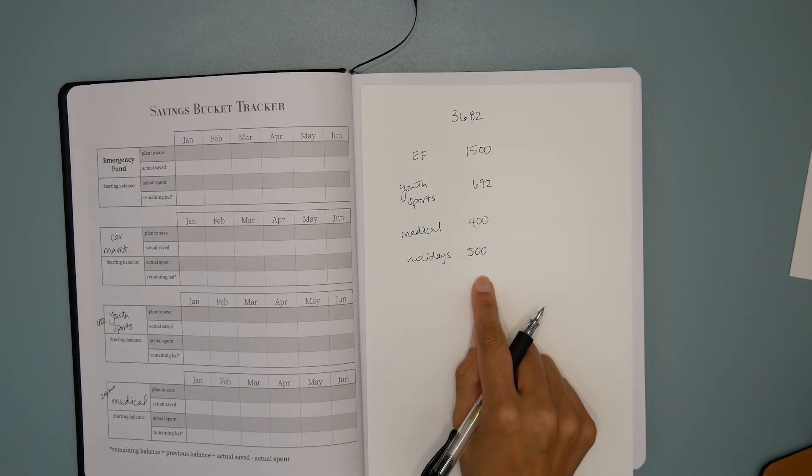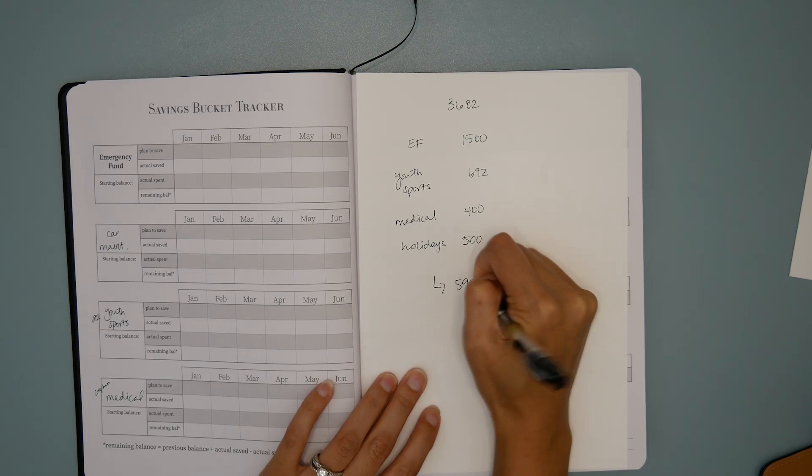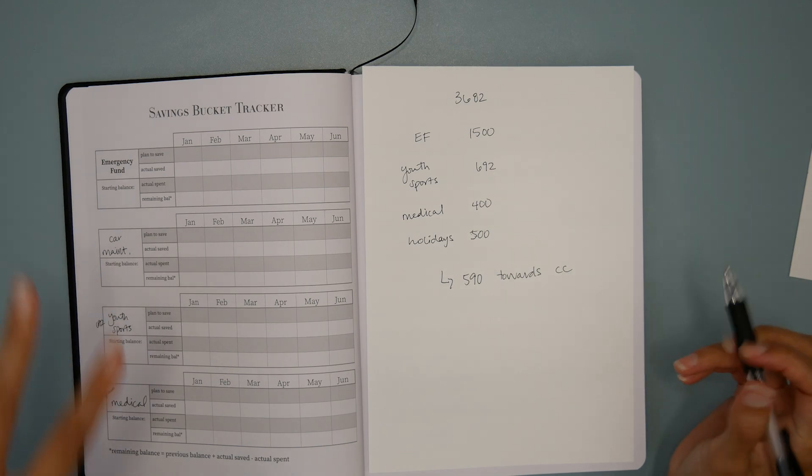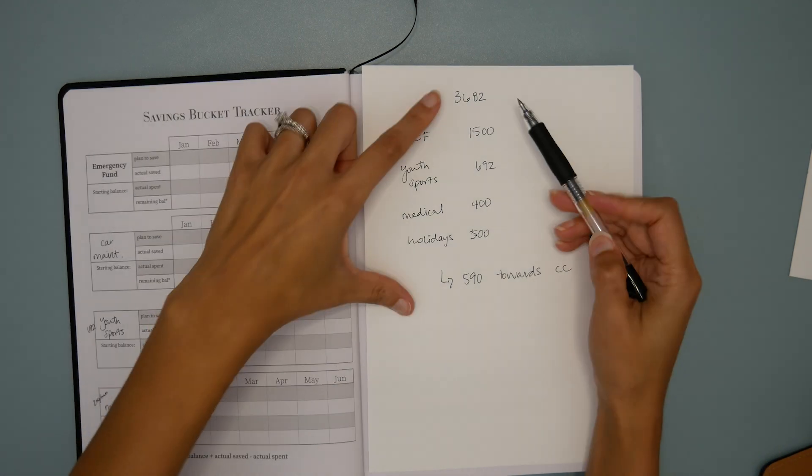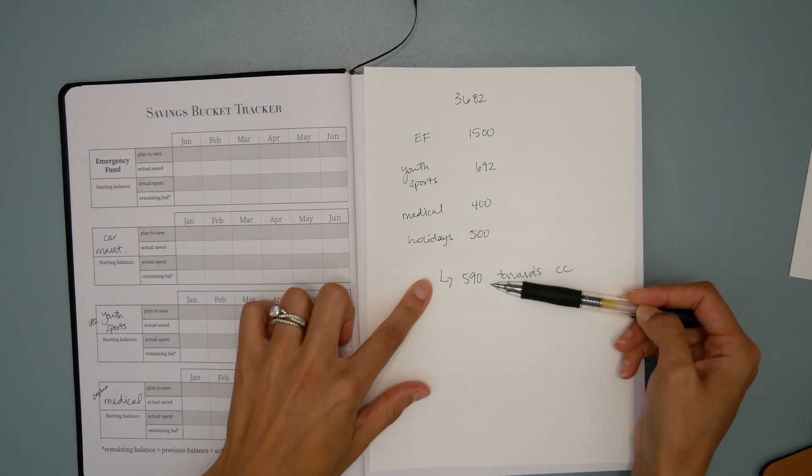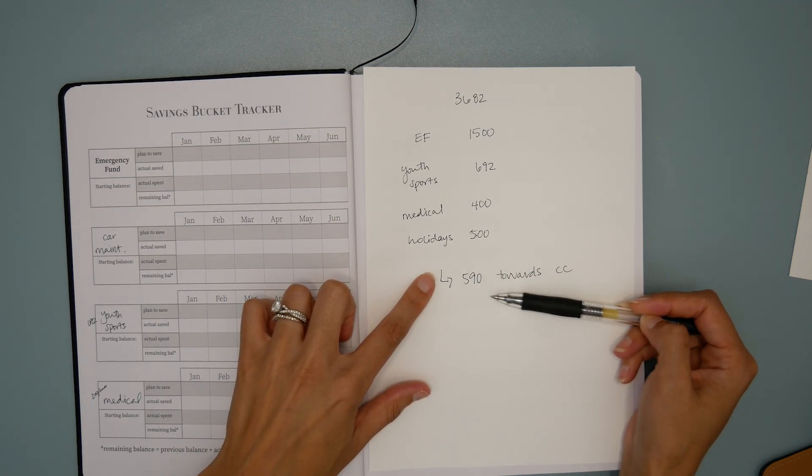Here is how I would reallocate that $3,682. For the emergency fund, you can draw that down to $1,500. The immediate costs that she has, $692 was the amount she gave me for youth sports. Medical, if we can put $400 to the side into that medical bucket, she should be squared away. Holidays, we could even do $500 there. We would still have $590 that could go towards her credit card debt. This is multitasking your money if I have ever seen it.